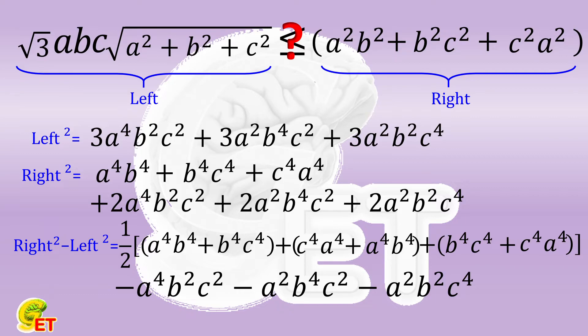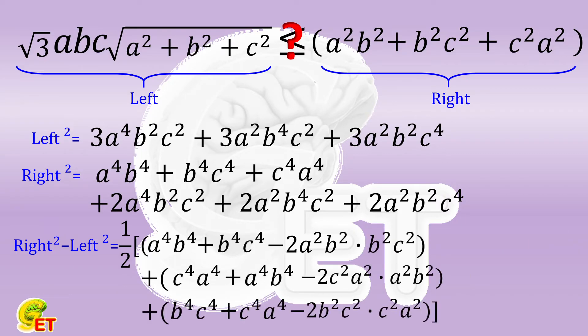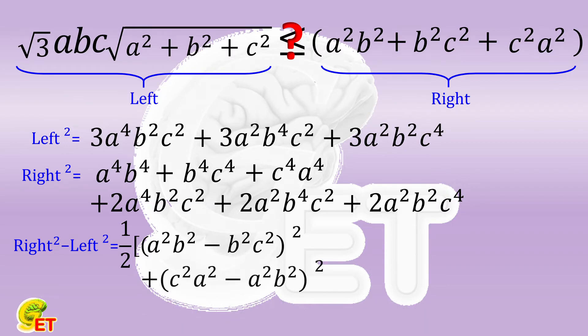Then we move the cross product terms into parenthesis. Actually, they are three perfect square terms. So their summation cannot be smaller than zero.